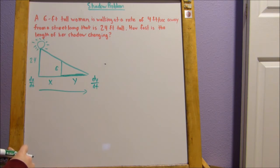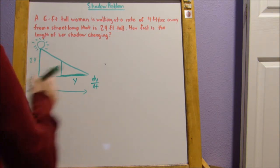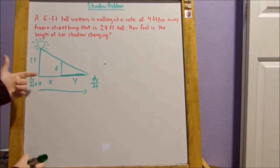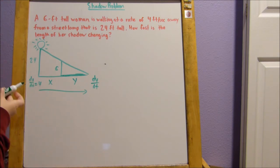But we're not going to be solving for this. We already know that dx over dt is 4, right? It tells us so. That she's walking away. So this is how fast she's going. She's walking away this way. Okay, so let me change markers real quickly.